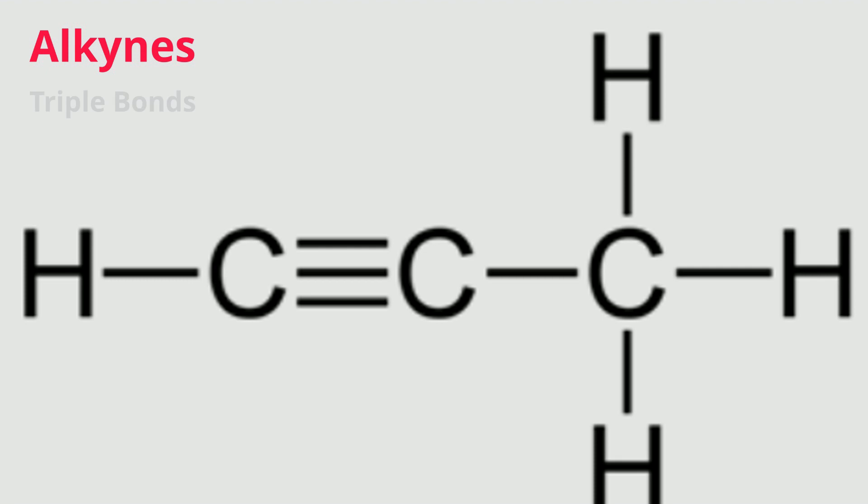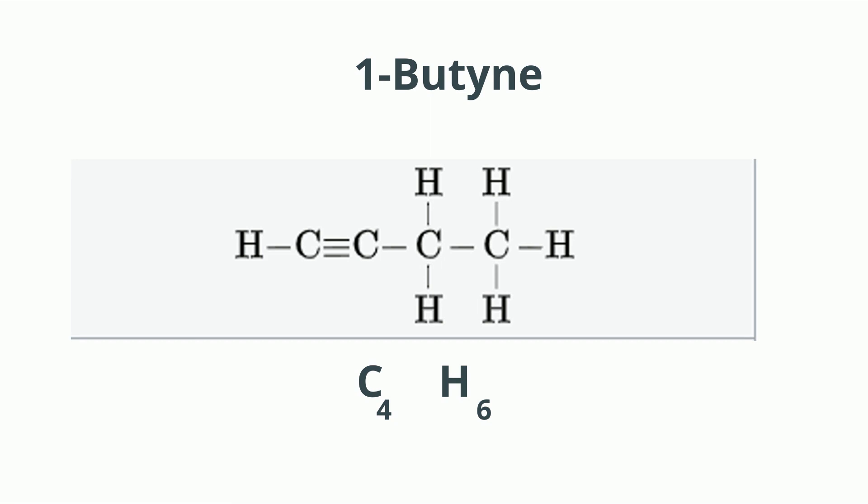Alkynes contain one or more triple bonds. The general formula is CnH2n minus 2. Two examples would be propyne, which is C3H4. So for the hydrogen, you take 3 times 2, which equals 6, and subtract 2, which equals 4. And butyne, which is C4H6. So you take 4 times 2, which is 8, subtract 2, and that's 6.